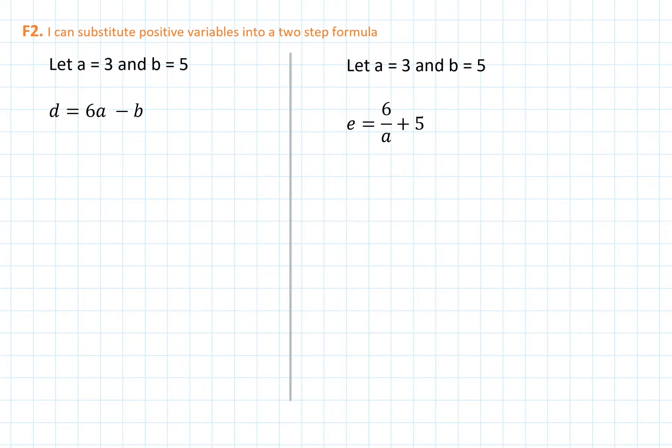So, for example, in the first example, our formula is d equals 6a minus b. In this case, a is 3 and b is 5. So we can write that d equals 6 times 3. Remember, 6a means 6 lots of a, or 6 times a.